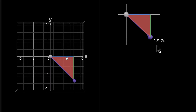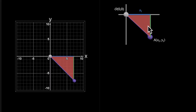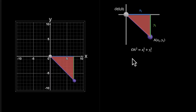So if this point is A(x1, y1) and this is the origin (0, 0), this length is the X coordinate, x1, and this is the Y coordinate, y1. This means the hypotenuse OA squared is given as x1² plus y1².